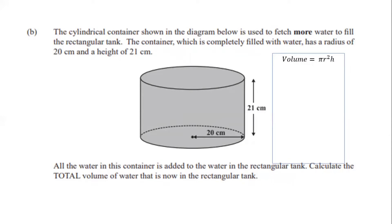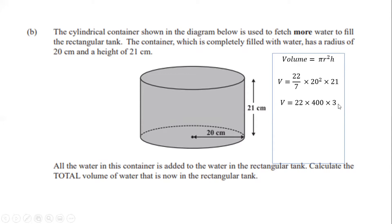We're using pi as 22 over 7. The radius is 20 cm and the height is 21 cm. So volume equals 22/7 times 20² times 21. Squaring 20 gives 400, and 7 into 21 goes 3 times, simplifying the calculation. The volume of the cylindrical container is 26,400 cm³.